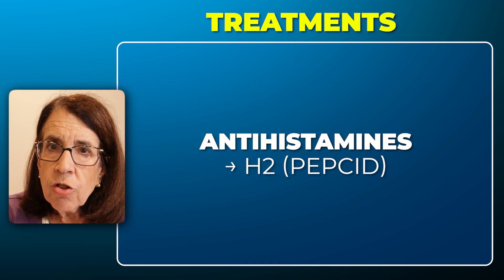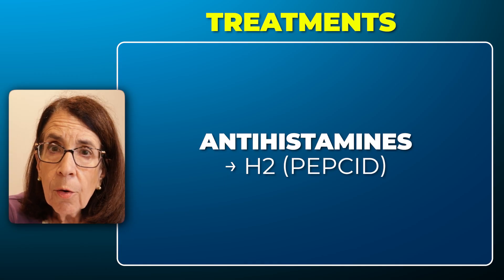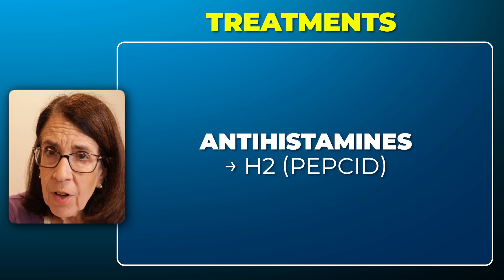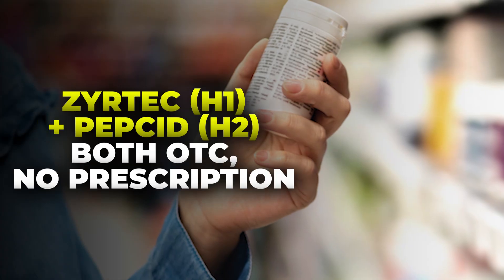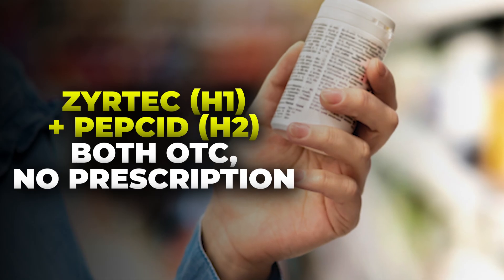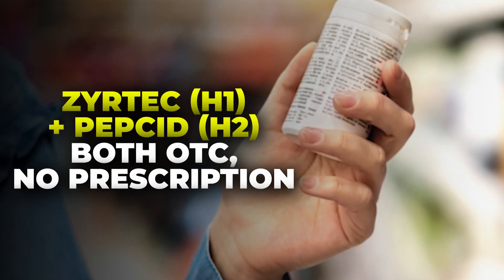Benadryl was one of the very first H1 blockers and tends to make people drowsy. For chronic long-term use, we tend to go with the second-generation H1 blockers, which include Claritin, Allegra, and Zyrtec. The H2 receptor is blocked by Pepcid — other options include Tagamet, but Pepcid is usually the first go-to. I recommend Zyrtec and Pepcid as the H1 and H2 blockers, and those are available over the counter without a prescription.